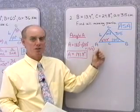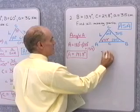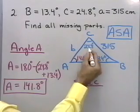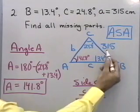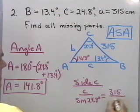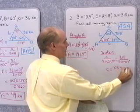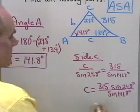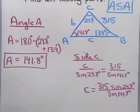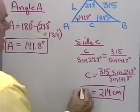Now I can solve for side c or side b using the Law of Sines. To solve for side c: c is to sine of 24.8 as 315 is to sine of 141.8 degrees. Multiplying both sides by sine 24.8, I get c equals 315 times sine 24.8 degrees divided by sine 141.8 degrees. Working this out on the calculator, that comes out to be 214 centimeters to three significant digits.